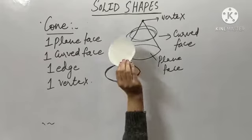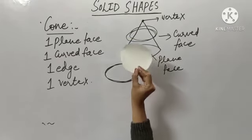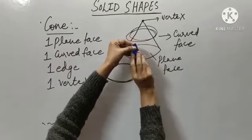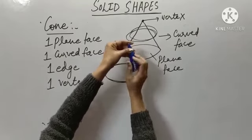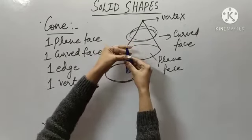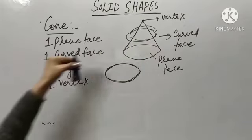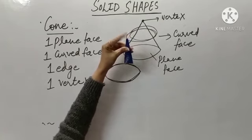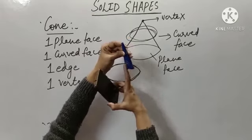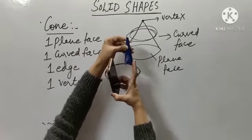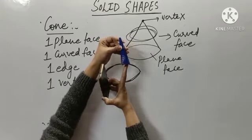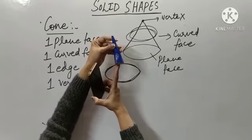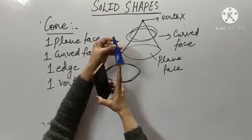This is my simple circle — I have cut it. Now see carefully. I have folded my circle in such a way to make the cone. This is my vertex. This is my curved face. This is my plane face — I can touch it — and this is the circular edge.